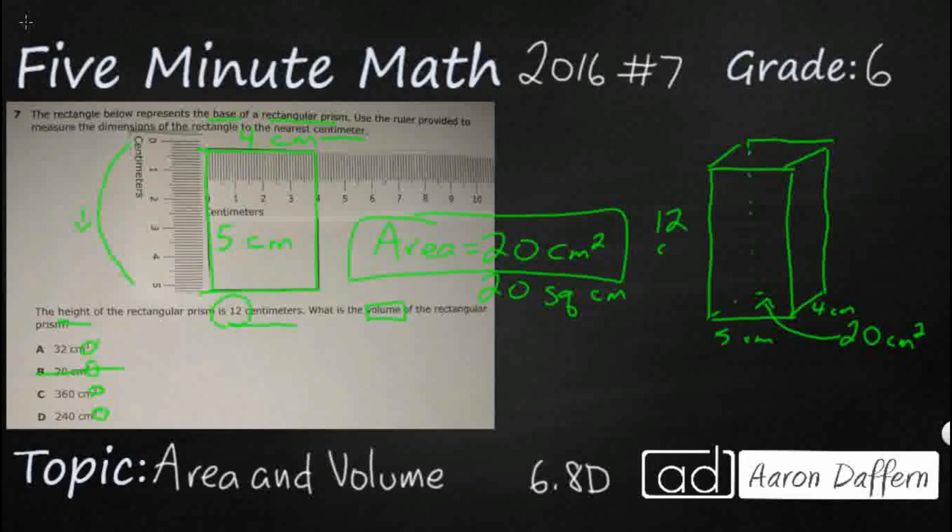So how do you find the volume of a rectangular prism? Well, there's two different things we can do. You can do length times width times height. So in this case, we can do length times width. That's going to be 5 cm times 4 cm times our height, which is this 12 cm.